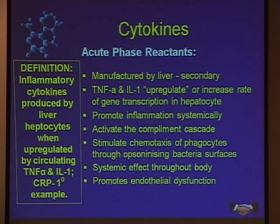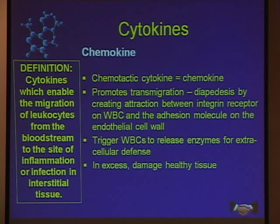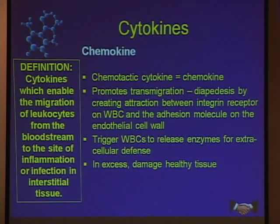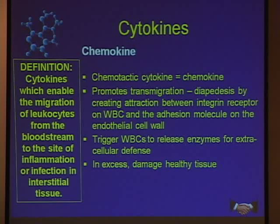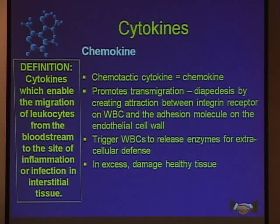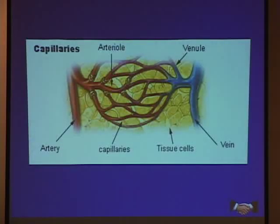A chemokine is a type of cytokine that acts more on the cellular surface. It's a chemoattractant that helps draw cells through diapedesis — the migration of fluids and cells through tissue structures, through basement membranes, and out into tissue spaces. It also attracts other white blood cells and chemicals to an area to help defend it. Everything we've talked about so far is good, positive, part of our defense mechanism, and necessary for life.